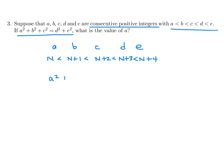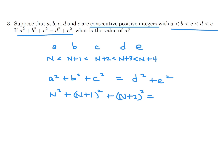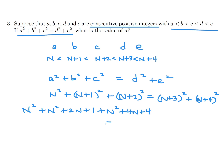We need a² + b² + c² = d² + e², so substituting: n² + (n+1)² + (n+2)² = (n+3)² + (n+4)². Expanding the right side gives n² + 2n + 1, plus n² + 4n + 4, plus n² + 6n + 9, plus n² + 8n + 16.